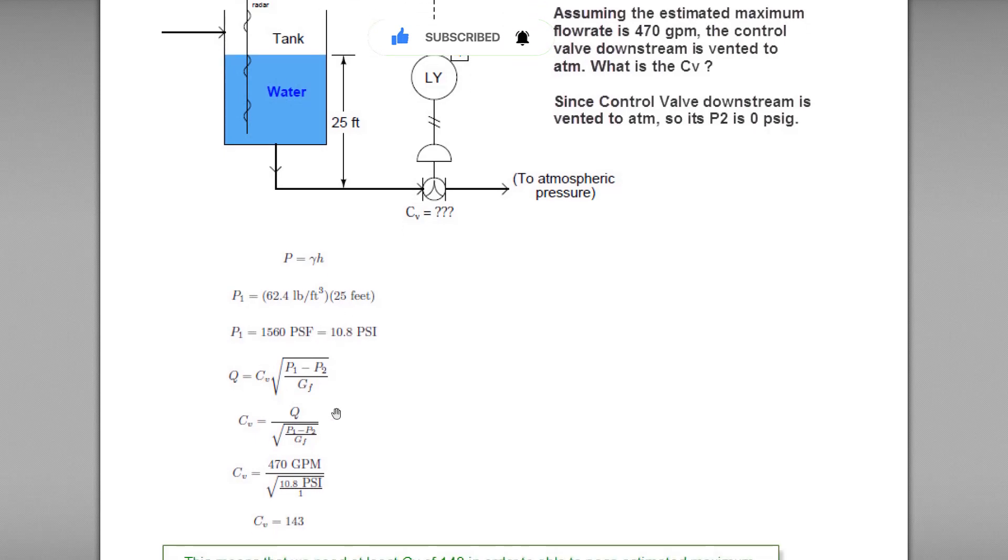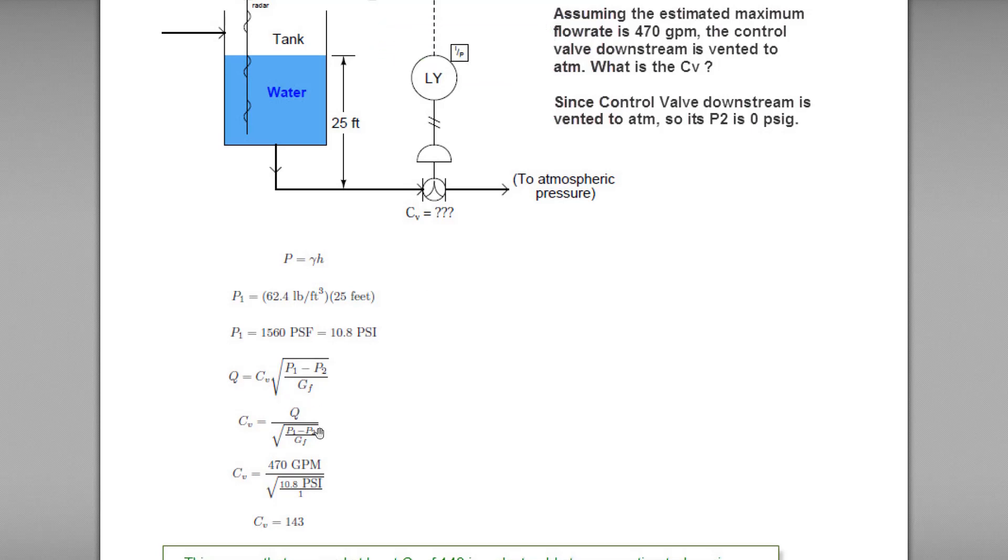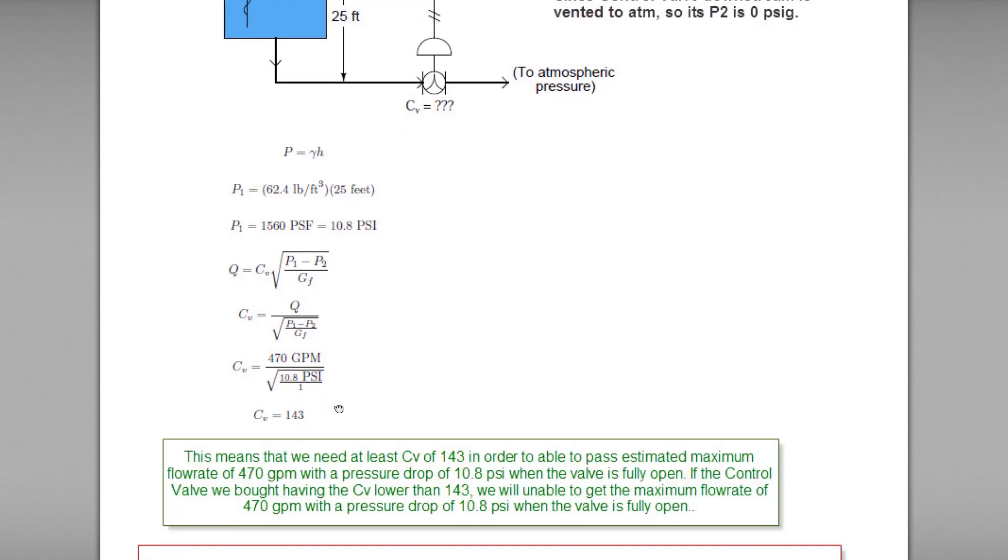So this is the formula for volumetric flow rate. You can put in the value that you have. The Q volumetric flow rate is 470 gallons per minute. Then the P1 upstream pressure is 10.8. The downstream pressure is 0. As I mentioned the P2 is 0. The specific gravity for water is 1. So the CV will be 143.